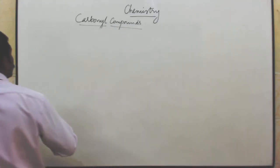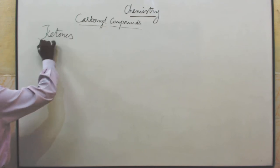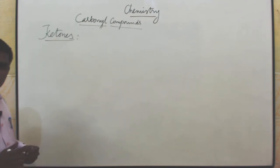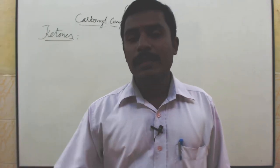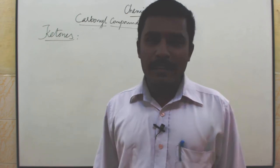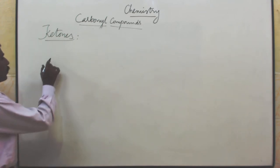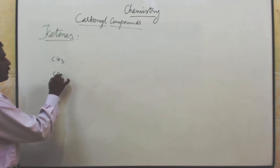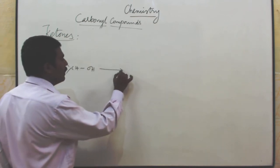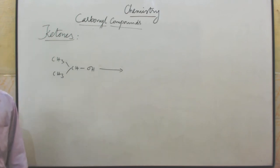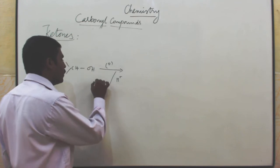Next topic is ketone. How to prepare ketone? We already know very well that primary alcohol undergoes oxidation reaction and aldehyde is a product. Secondary alcohol undergoes oxidation reaction and ketone is a product. Using this, secondary alcohol — namely isopropyl alcohol, CH3CHOHCH3 — undergoes oxidation reaction in the presence of acidified potassium permanganate.